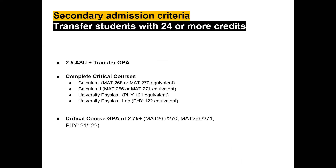Secondary admission criteria was created specifically for transfer students, because most transfer students have attended several colleges and may not have a 3.0. For transfer students with 24 or more credits, we're looking for an ASU plus transfer GPA of a minimum of 2.5. They must also have completed critical courses for success in electrical engineering: calculus one, calculus two, and university physics with lab. The critical course GPA for those courses must be 2.75 in total — so a cumulative GPA of 2.5 and a critical class GPA of 2.75.